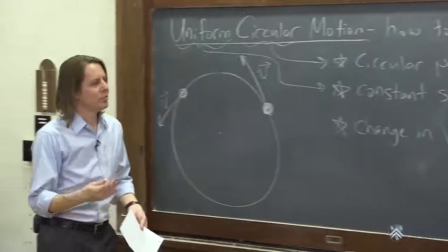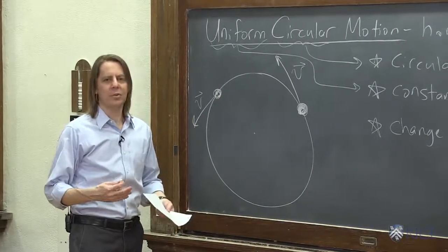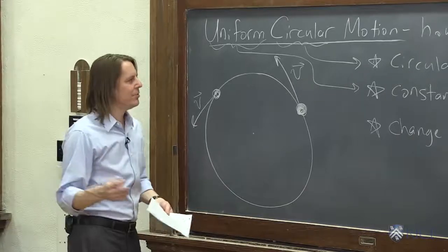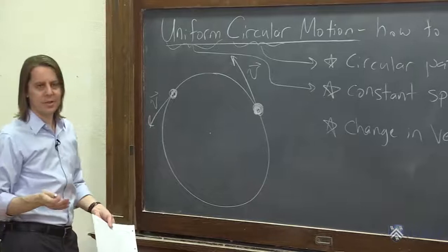So in 1D kinematics, what we've done so far, acceleration always meant that the magnitude of the velocity vector was increasing. But this is completely different. Here the magnitude is constant. That's why we call it a speed. But the direction is changing.